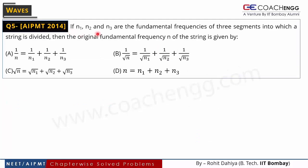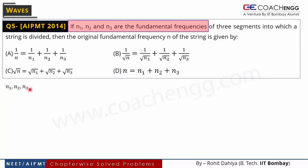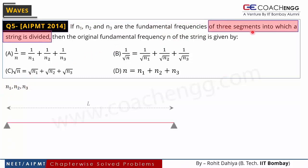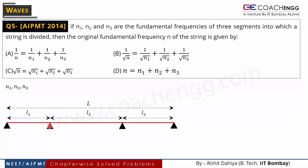Now the next AIPMT 2014 question: if N1, N2, and N3 are the fundamental frequencies of 3 segments into which a string is divided. We have a string of total length L tied at both ends. We divide this string into 3 parts by creating 2 additional junctions in the middle, so the string is in 3 parts with lengths L1, L2, and L3.